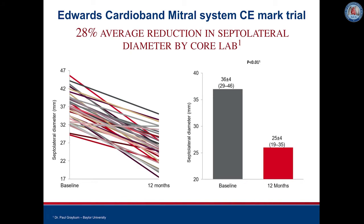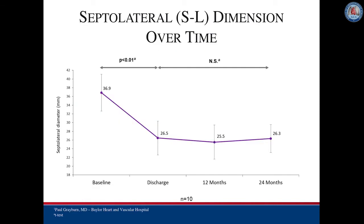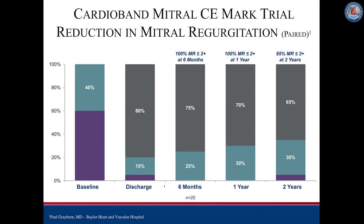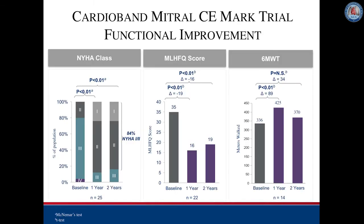There was a significant reduction in the septolateral diameter by the echo core lab observed in all patients, and this reduction in septolateral dimension was stable over time. The reduction of mitral regurgitation was not only significant but was also stable over time, with 95% of patients demonstrating 2+ or less mitral regurgitation at two years. This translated into marked improvement in New York Heart Association class, heart failure quality of life scores, and improvement in six-minute walk distance.